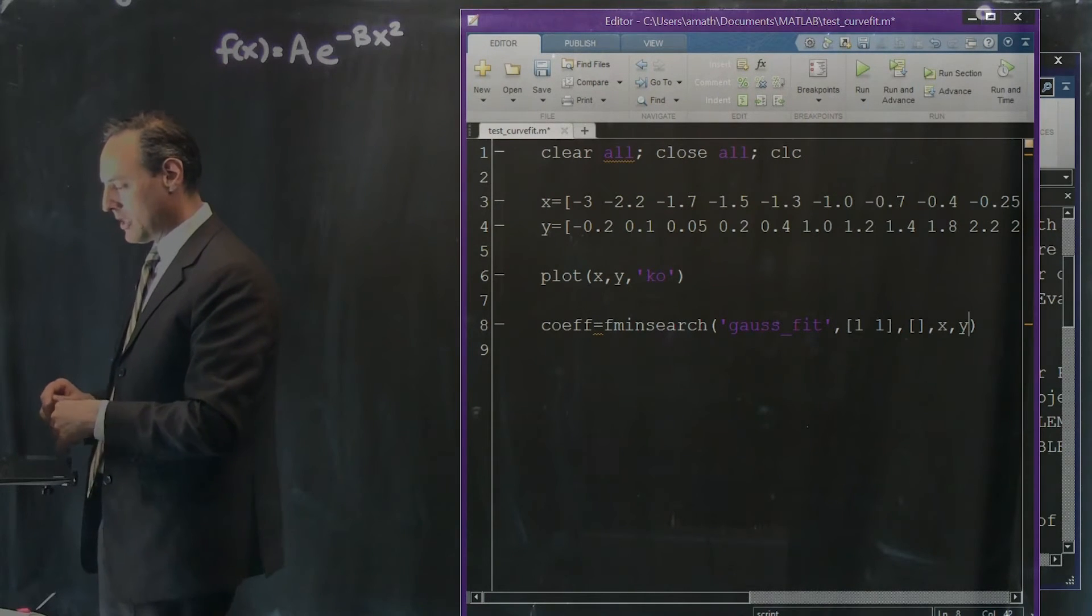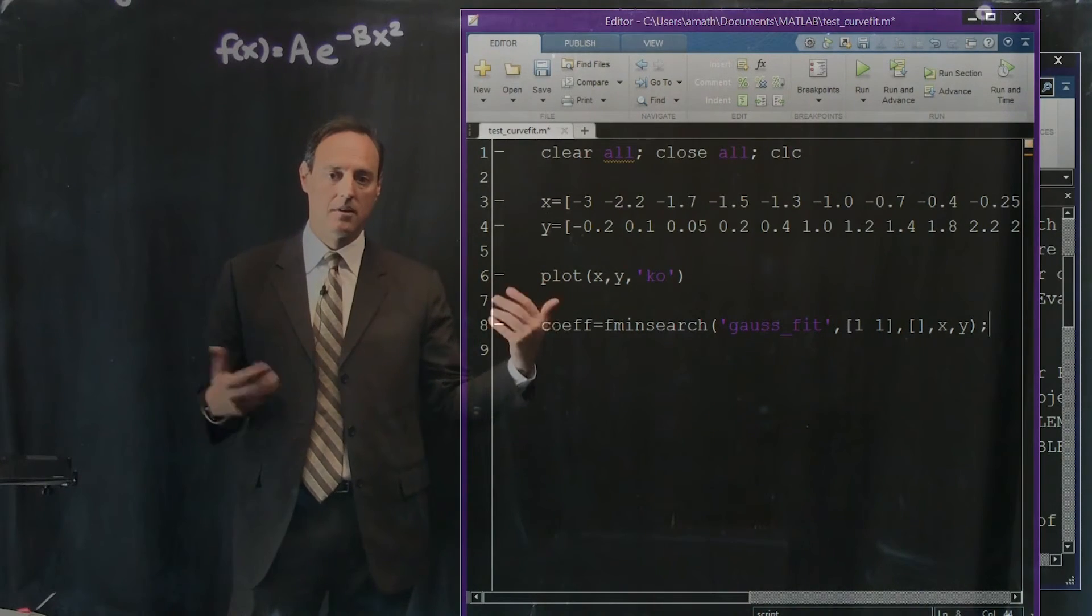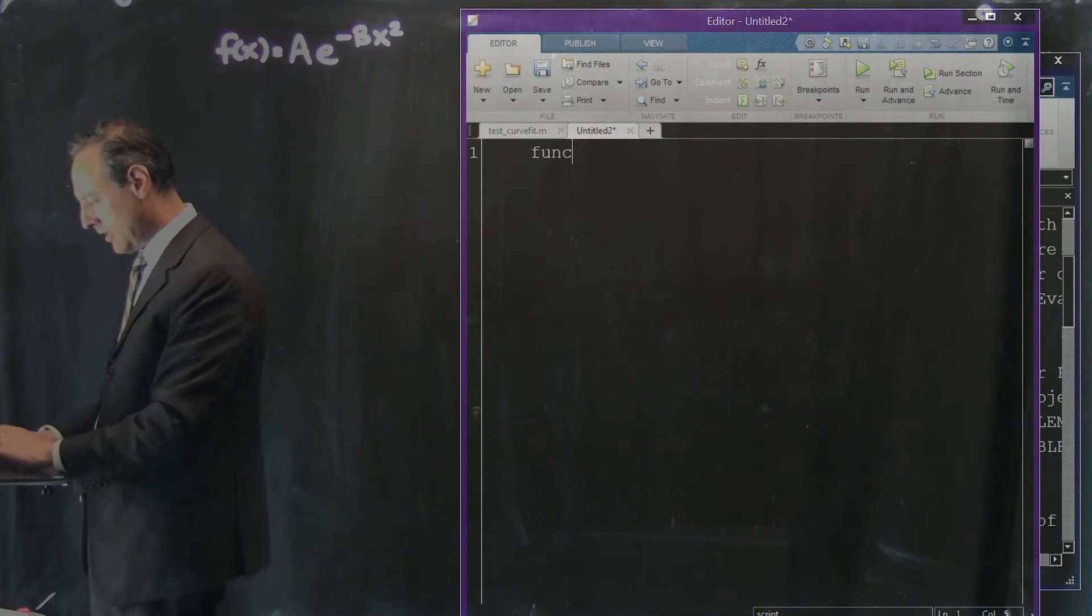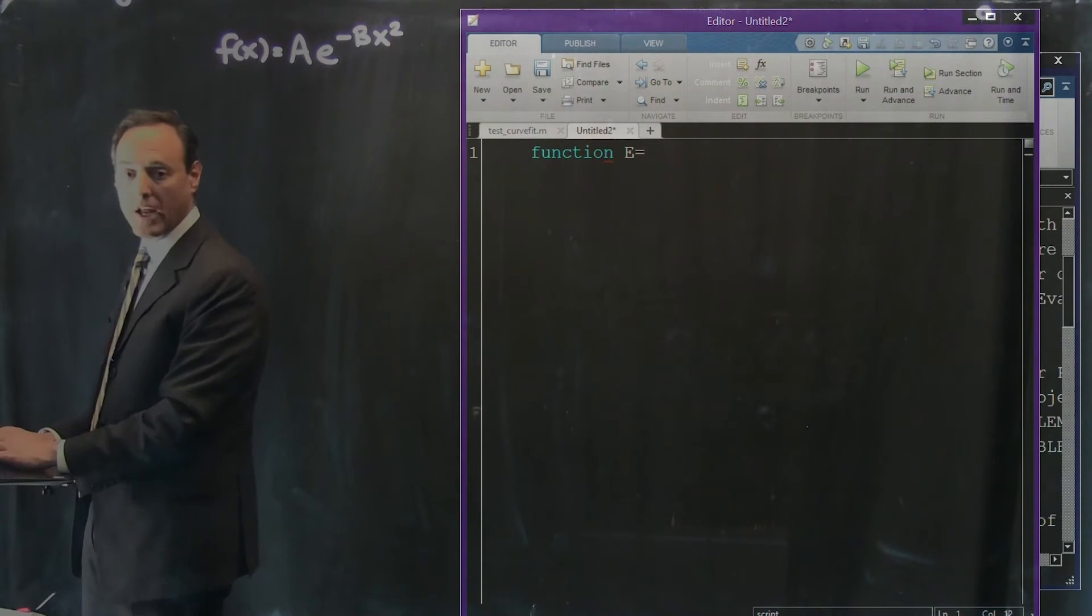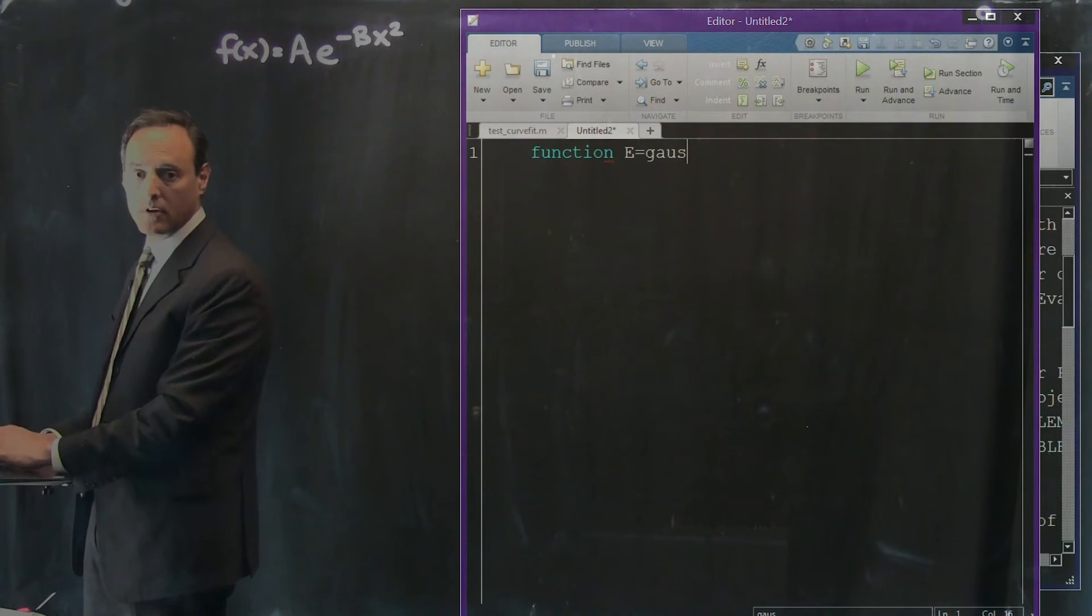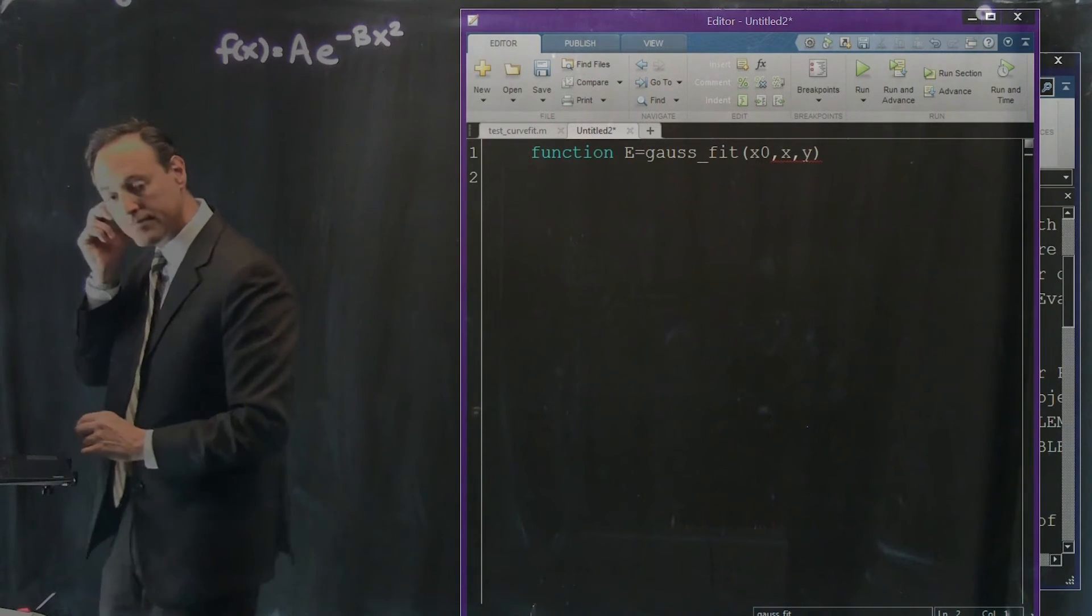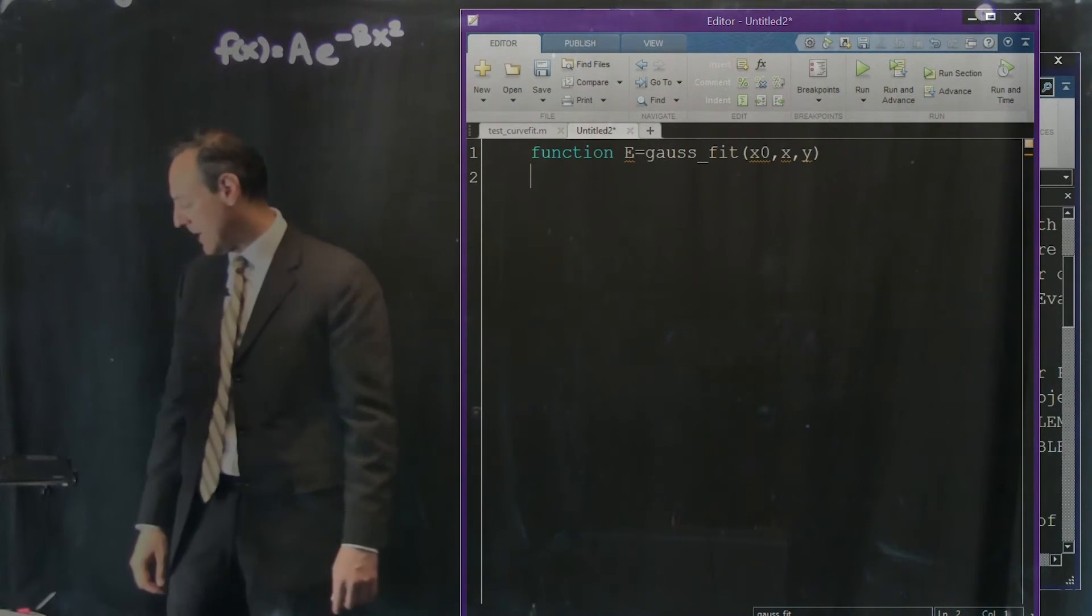Now in addition to this I need a right-hand side function called gaussfit.m. I need that function. So let's make a new file function and this thing is called, what did I call it, we're going to evaluate the error. Gaussfit is going to be the name of this thing and what I'm going to pass in here is my initial guess, let's call it x0. There's some options that come in but then I'm passing my x and y values. Those are going to be my data that I pass in.